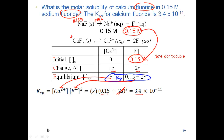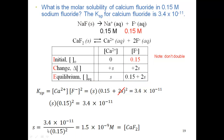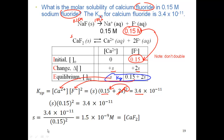Dropping 2S gives: 3.4×10⁻¹¹ = S × (0.15)². I still square that numeric number. Solving: S = 3.4×10⁻¹¹ ÷ (0.15)² = 1.5×10⁻⁹ molarity. S represents the calcium concentration and equals the molar solubility of calcium fluoride, which is 1.5×10⁻⁹ molarity.